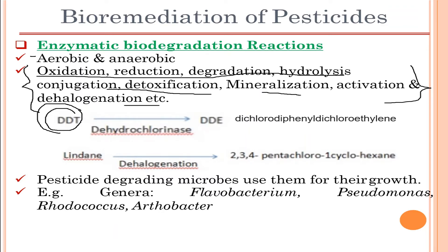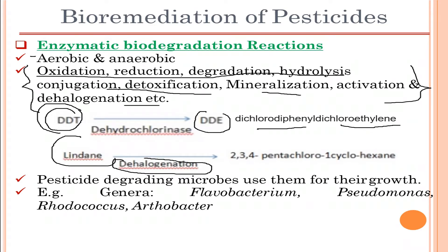Some common examples: DDT gets dehydrochlorinated by the enzyme dehydrochlorinase and is degraded to DDE (dichlorodiphenyldichloroethylene). Another pesticide, lindane, undergoes dehalogenation and is converted to 2,3-pentachloro-1-cyclohexane. These reactions are carried out with the help of specific enzymes, hence named accordingly — such as dehydrochlorinase.